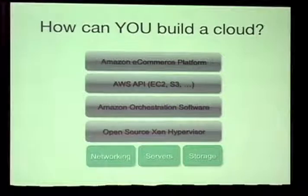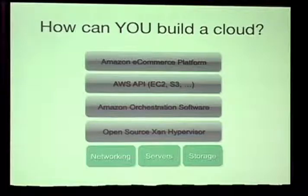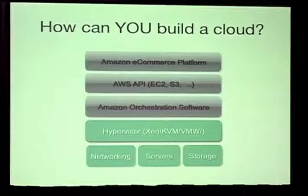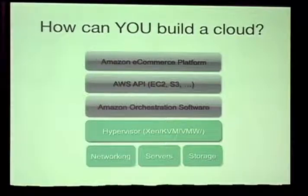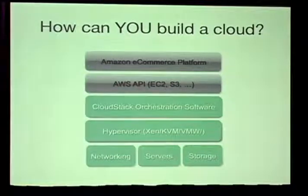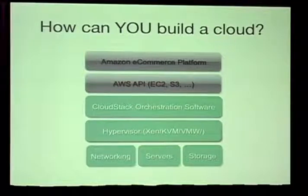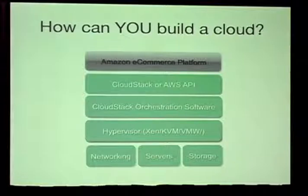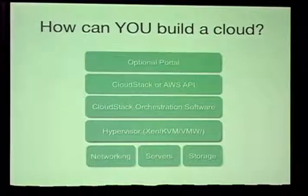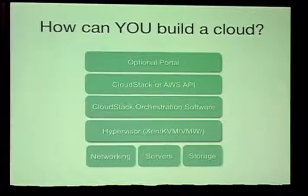So how do you build your own cloud? You start off with the same thing — networking, server, storage — and it doesn't have to be commodity; you can use the most expensive servers you can find. You can use any hypervisors you want: Xen, KVM, VMware, even Oracle VM. This is where CloudStack steps in, where you can orchestrate the networking, hypervisors, and storage in order to give you the same cloud-like experience. You can use that with the CloudStack API or the EC2 API, and if you're a public cloud provider, you probably need some kind of portal to sell these services.